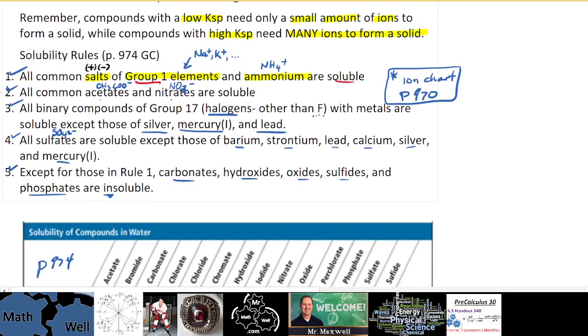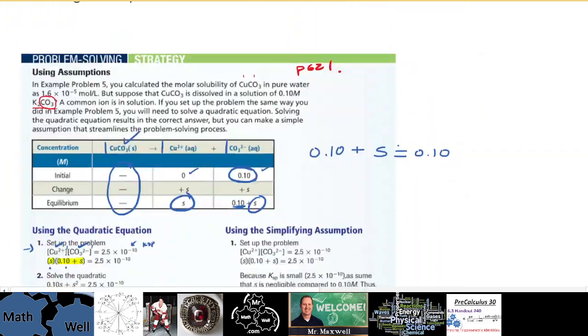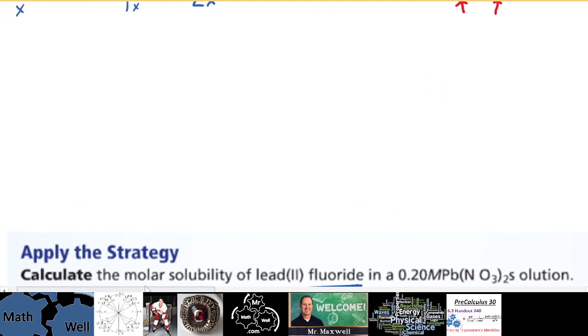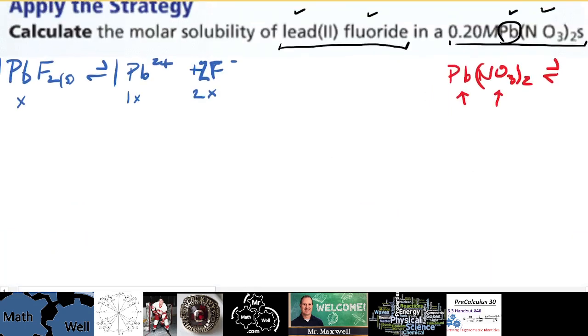What about all common acetates and nitrates are soluble. So all nitrates. So we can guess that this is going to fully dissociate. Why is that important? Well, because we know then exactly the concentration of lead ions. So I'm actually going to even show this like just a one arrow, one way arrow, because it's all going to dissolve. It's soluble.